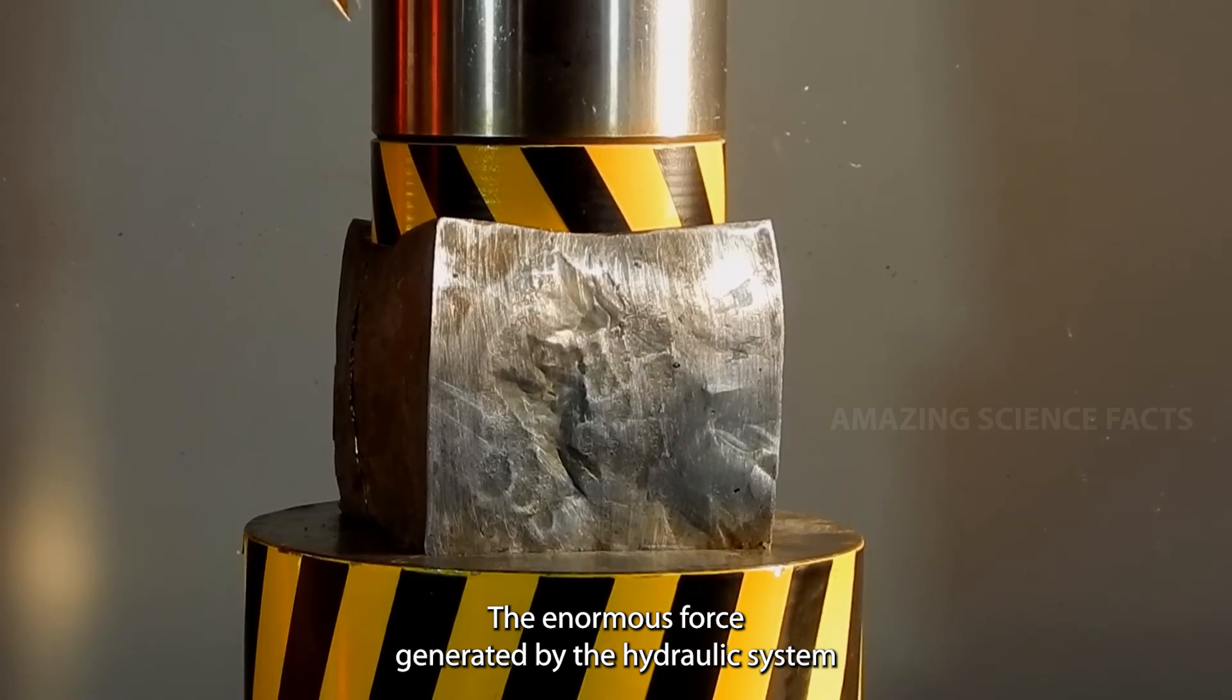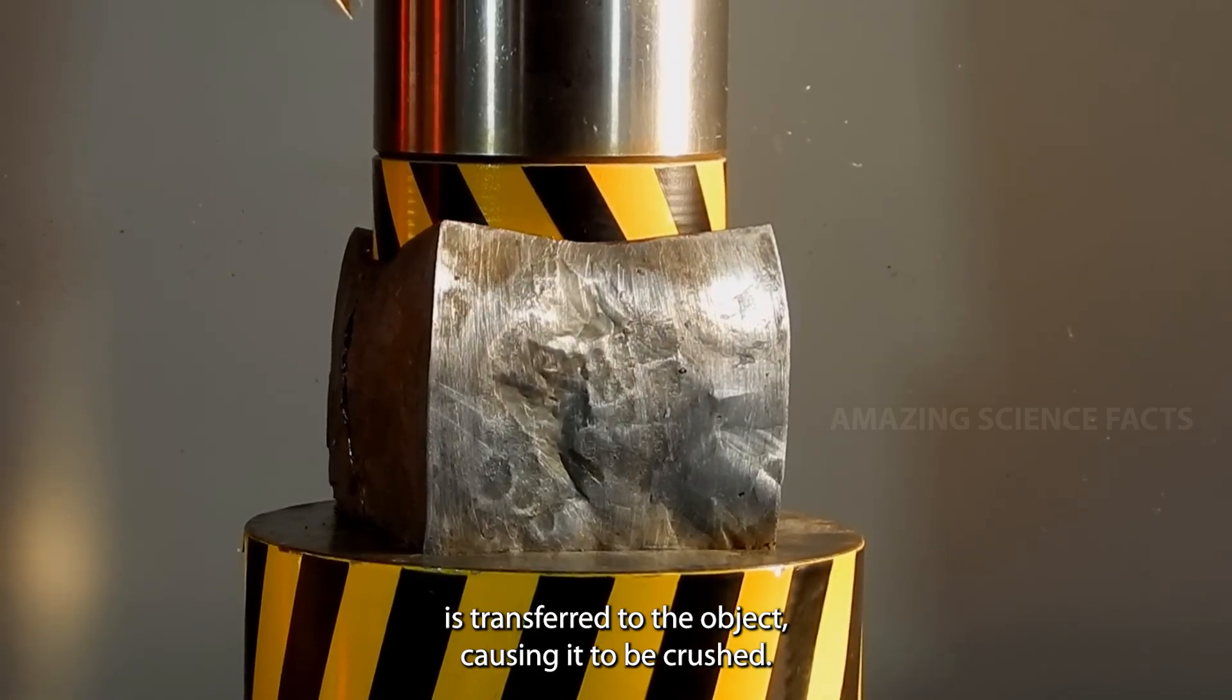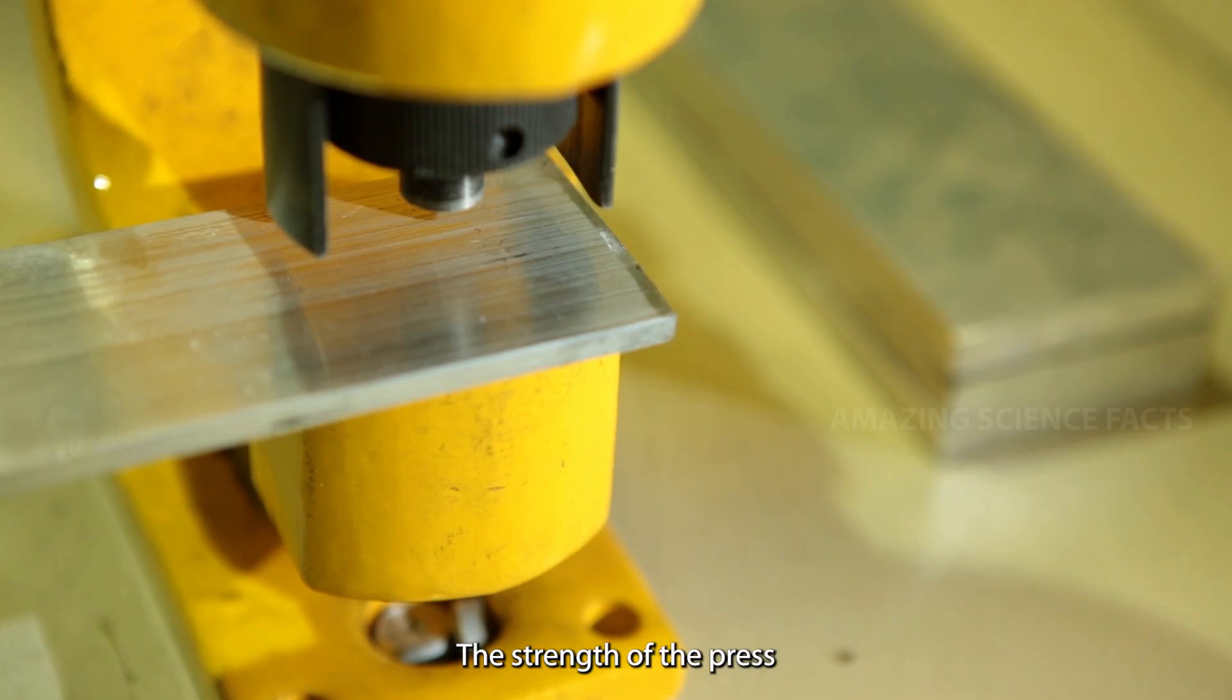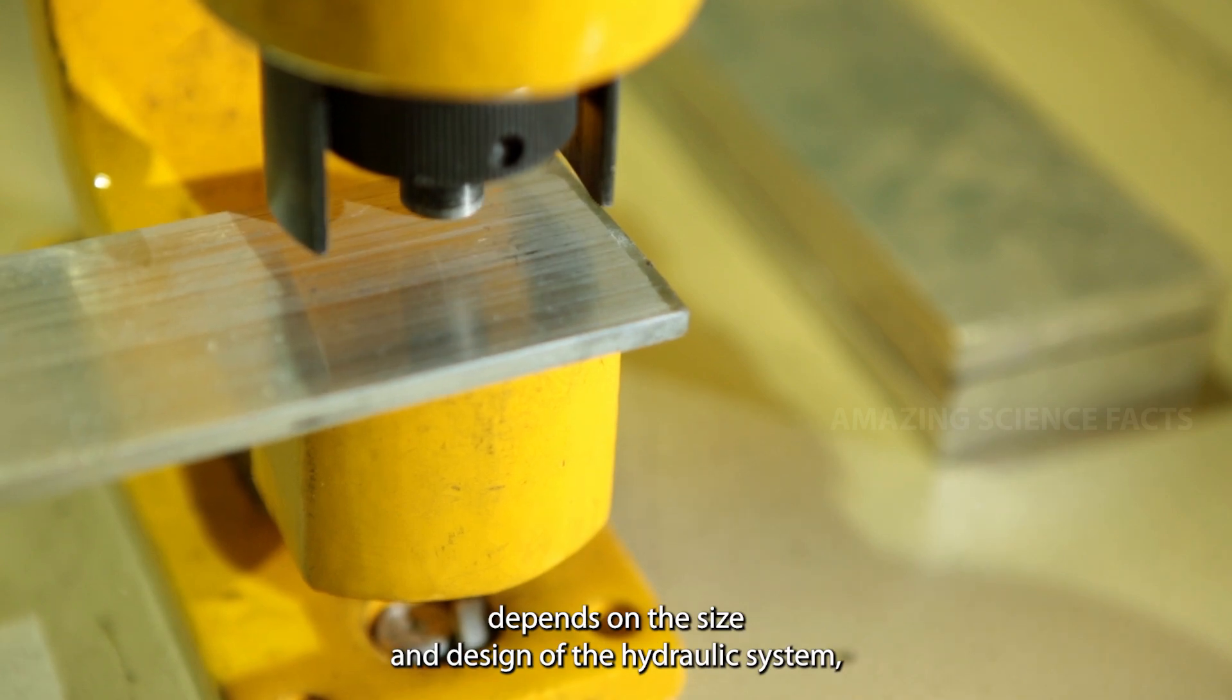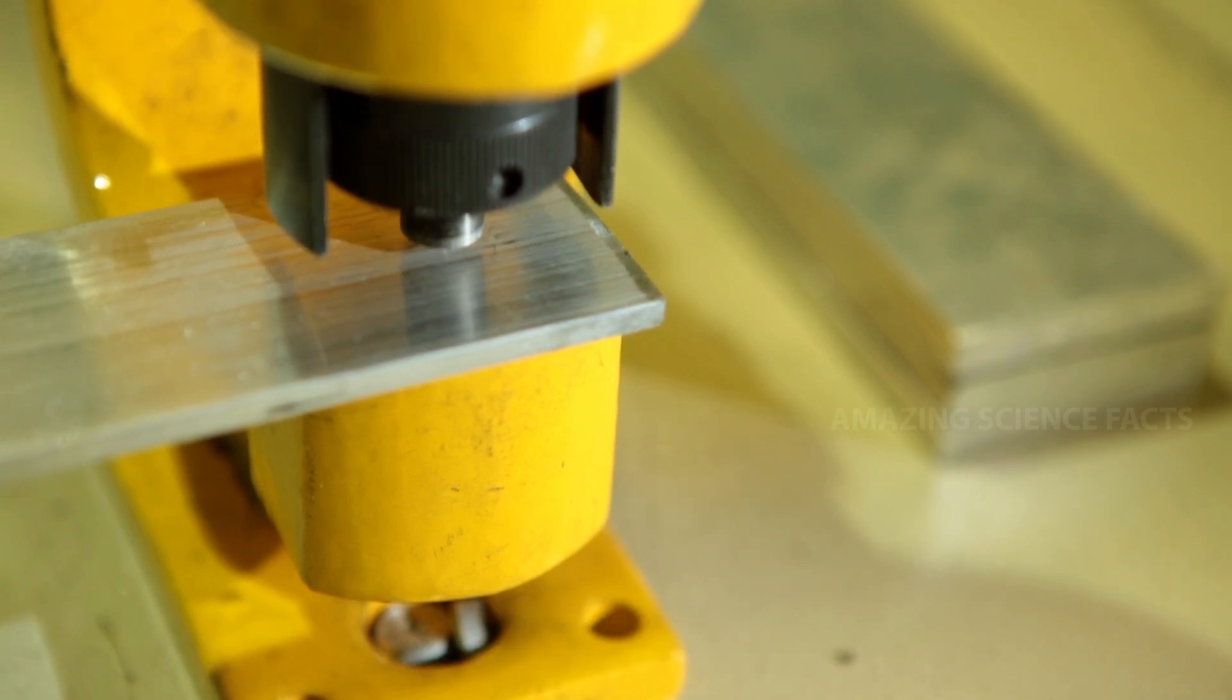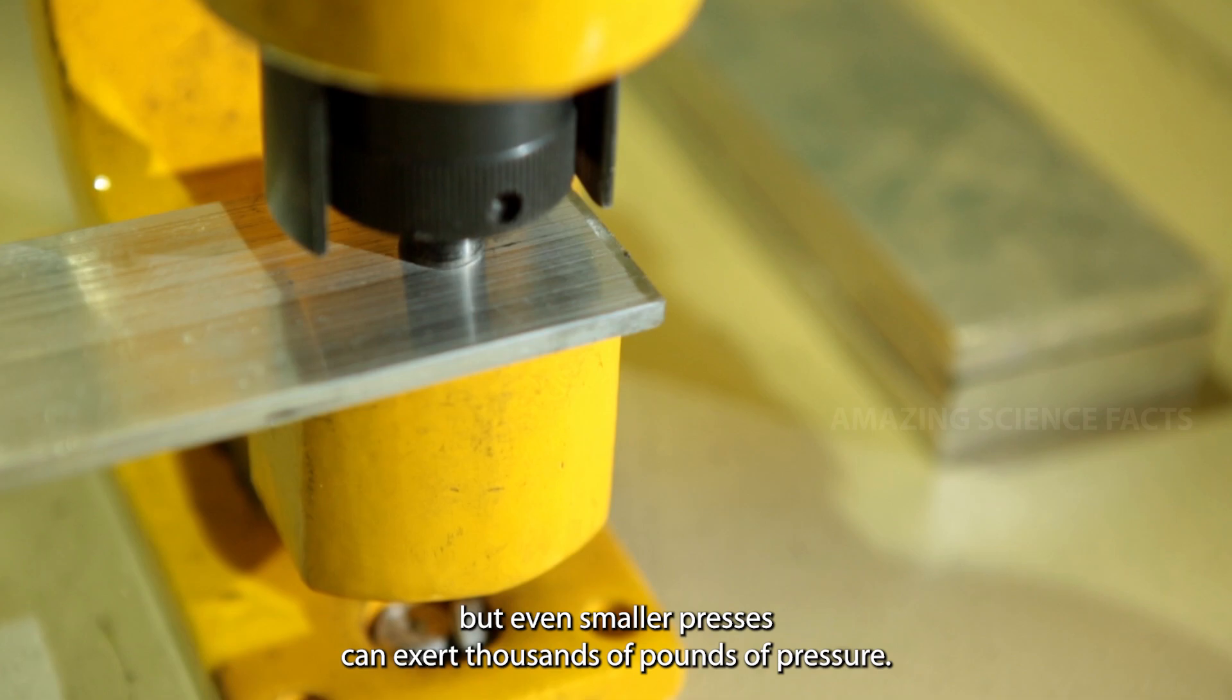The enormous force generated by the hydraulic system is transferred to the object, causing it to be crushed. The strength of the press depends on the size and design of the hydraulic system, but even smaller presses can exert thousands of pounds of pressure.